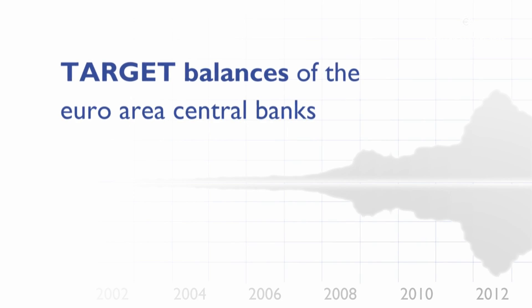Any currency area needs to have a payment system where the payments will be settled in the currency. TARGET is the payment system of the euro system. The six letters mean the Trans-European Automated Real-time Gross Settlement Express Transfer. We obviously need a payment system within the monetary union which is cross-border, in order to ensure that one euro deposit with a central bank in one country is always changeable into a deposit with a central bank in another country.